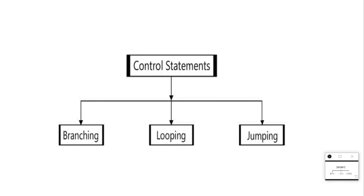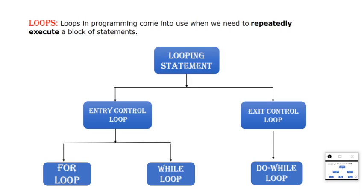Coming to the control statement — control statements are generally divided into three categories: branching, looping, and jumping. In the previous video we already discussed about branching statements, so in this video we are going to discuss about looping statements, and in the next video we will see jumping statements.